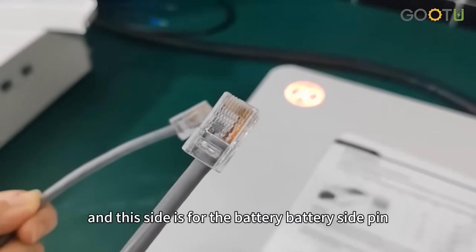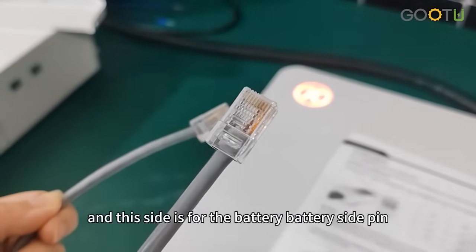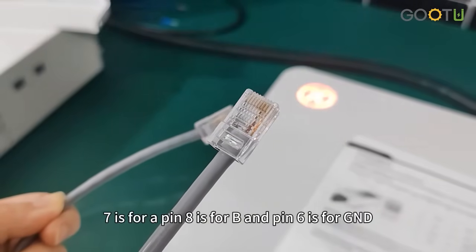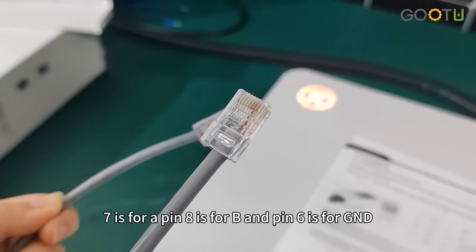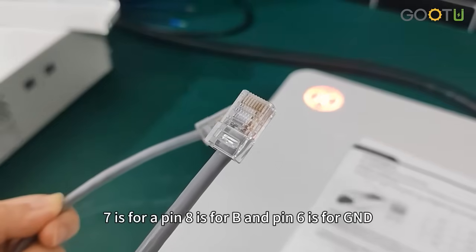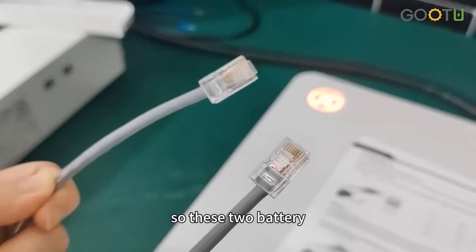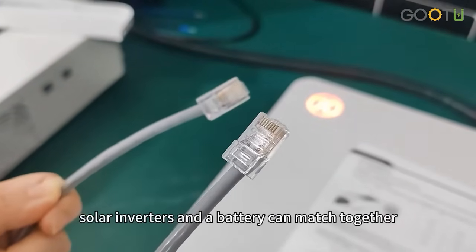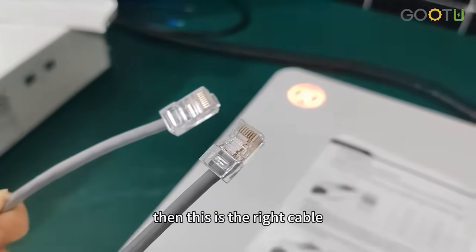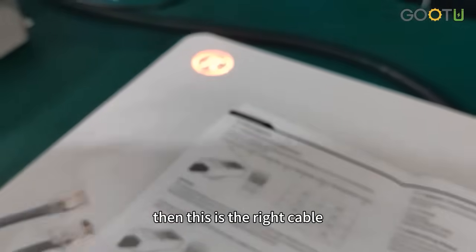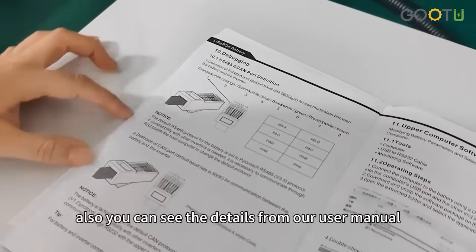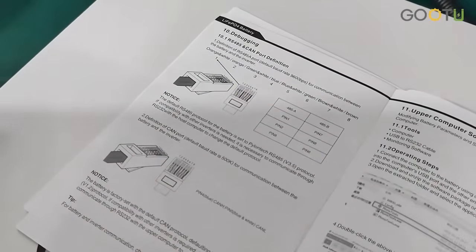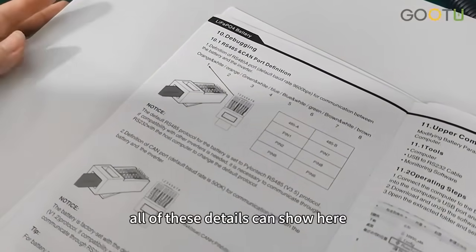And this side is for the battery side: pin 7 is for A, pin 8 is for B, and pin 6 is for GND. So these two, solar inverters and battery, can match together. Then this is the right cable. You can also see the details from our user manual. All of these details can show here.